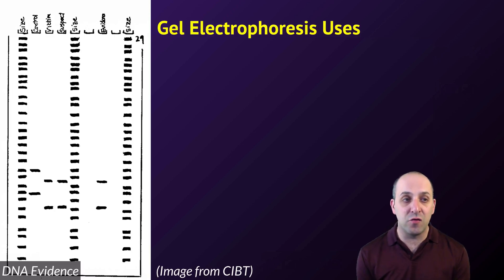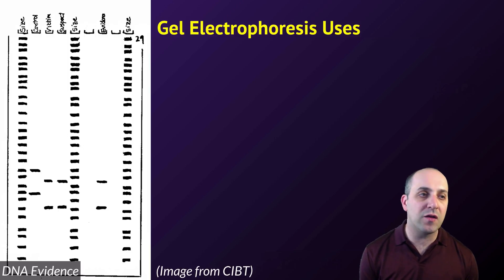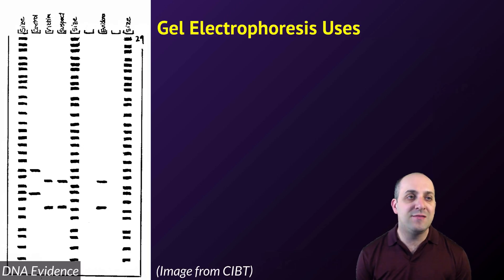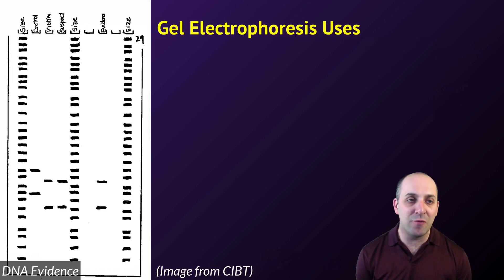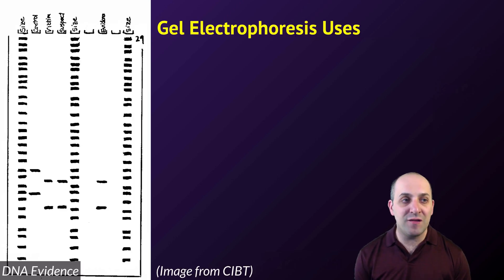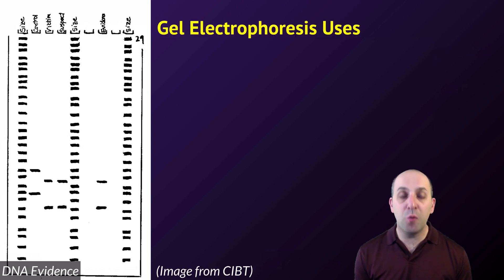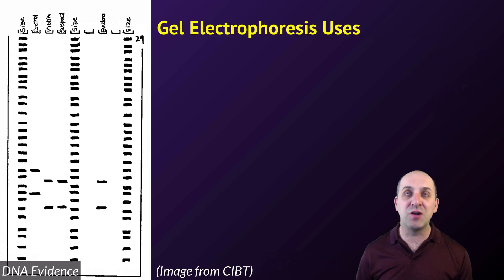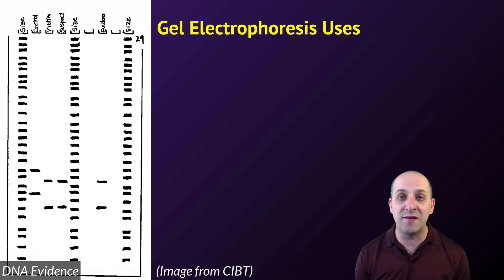Gel electrophoresis is also widely used in forensics. This image is a representation of DNA evidence used in a criminal case. Going from left to right, we can see size markers, control DNA from the person running the gel, DNA isolated from the victim, DNA left on the victim from the perpetrator, DNA from the suspect, and DNA from other evidence recovered. The banding patterns for the DNA left on the victim, the DNA of the suspect, and the evidence all match — supporting the conclusion that the suspect committed the crime. Actual trials look at multiple different locations in the genome to establish an increasing likelihood.